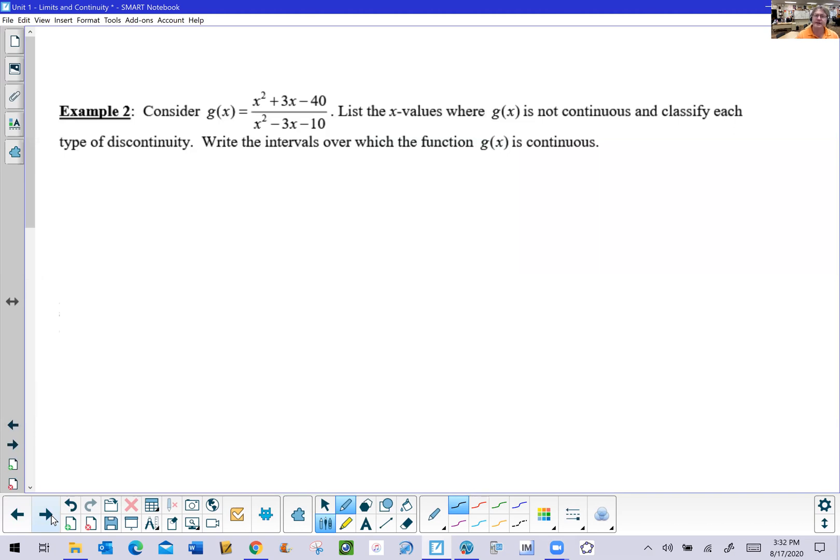Consider the function g(x) to be x squared plus 3x minus 40 over x squared minus 3x minus 10. We want to list the x values where g(x) is not continuous and classify each type of discontinuity. Write those intervals over which the function g(x) is continuous.